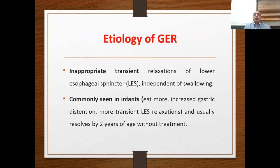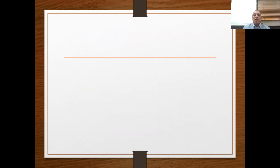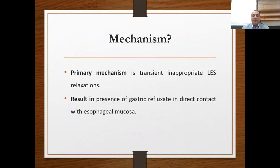Regarding the etiology of gastroesophageal reflux, the most common pathophysiology is inappropriate transient relaxation of the lower esophageal sphincter, independent of swallowing. This is commonly seen in infants as they eat more with increased gastric distension, and usually resolves by two years of age without treatment. The primary mechanism is transient, inappropriate lower esophageal sphincter relaxation resulting in gastric content in direct contact with the esophageal mucosa.